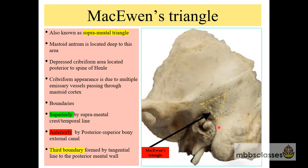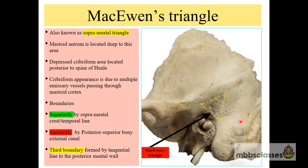What is McEwen's triangle? McEwen's triangle is also known as the suprameatal triangle. It is an anatomical landmark to identify the mastoid antrum during mastoid surgeries. The mastoid antrum is located deep to this area, at a depth of 1.5 cm in adults, but in children it is more superficial. This McEwen's triangle is an arbitrary triangle formed by three lines.